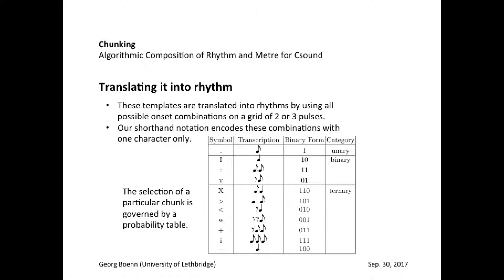The final step is to translate the chunks of twos and threes into actual rhythms. For this purpose, we have developed a shorthand notation. It is based on a grid of two or three pulses, and as you can see in the left column of the table, simple ASCII codes are able to encode all the possible rhythmic chunks.